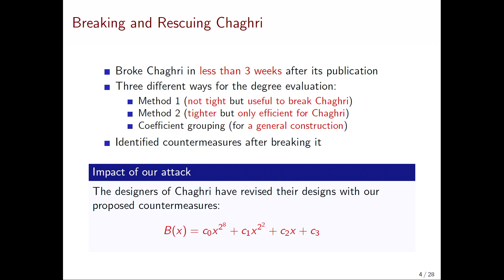We broke Jaggery in less than three weeks after its publication on ePrint. Our technique is the high-order differential attack: we need to upper-bound the algebraic degree. We tried three different methods, and in this paper we describe the general method called coefficient grouping. This technique is highly related to our method two. The first two methods are too dedicated for Jaggery — not elegant enough — so we wanted to do more. Based on our understanding of coefficient grouping, we figured out where the problem is and proposed a countermeasure, which the designers also used. The problem is that B is too sparse, so we propose to use a denser one.